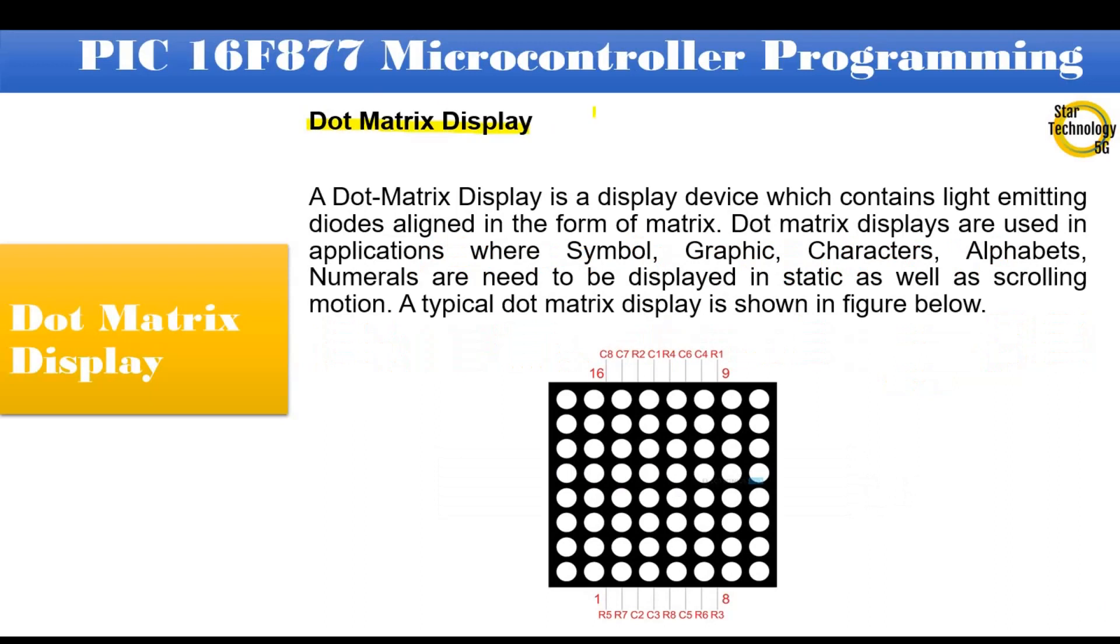Dot matrix display. A dot matrix display is a display device which contains light emitting diodes aligned in the form of matrix. Dot matrix displays are used in applications where symbols, graphics, characters, alphabets, numerals are needed to be displayed in static as well as scrolling motion. A typical dot matrix display is shown in figure below.